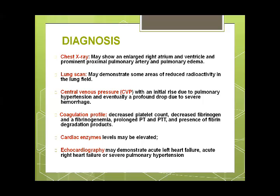Central venous pressure shows an initial rise due to pulmonary hypertension, and eventually a profound drop due to severe hemorrhage. Coagulation profile will be disturbed if DIC develops: laboratory findings include prolonged PT and APTT, decreased fibrinogen, and increased fibrinogen degradation products (FDPs). Cardiac enzyme levels may be elevated, and echocardiography may reveal left heart failure, right heart failure, or severe pulmonary hypertension.